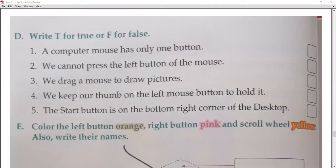Write T for true or F for false. Number one: a computer mouse has only one button — that is false, it has two buttons. Number two: we cannot press the left button of the mouse — that is also false, we can click the left button.